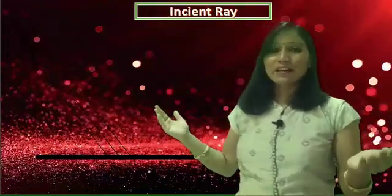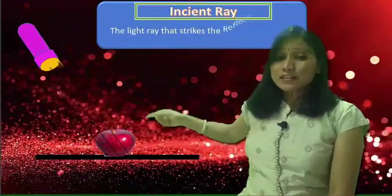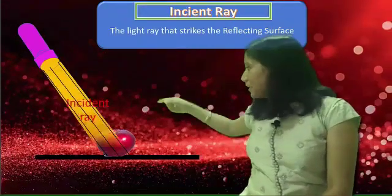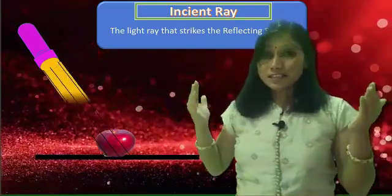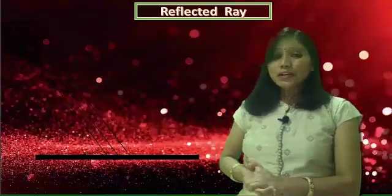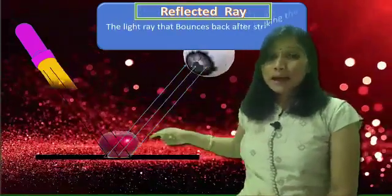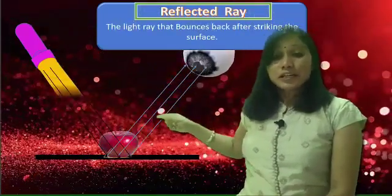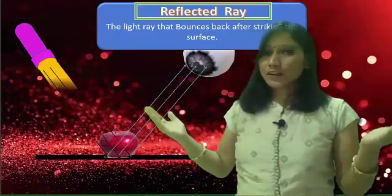The next point is incident ray. The light ray that strikes the reflecting surface is known as the incident ray. The light ray that bounces back after striking the surface is known as the reflected ray.